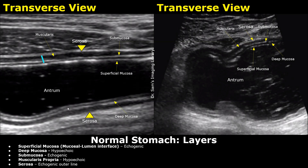Starting from the innermost layer: the superficial mucosa appears echogenic — this echogenic layer is also the interface between the stomach fluid and the mucosa, and is the first layer. The second layer is the deep mucosa, which is hypoechoic. The echogenicity alternates between hyperechoic and hypoechoic layers. After the deep mucosa, we have the submucosa, which is echogenic. The fourth layer is the muscularis propria, which is hypoechoic and usually the thickest layer. The outermost layer is the echogenic serosa.